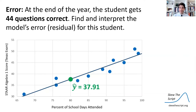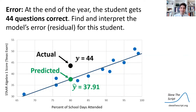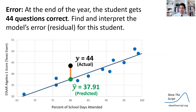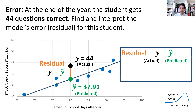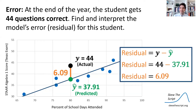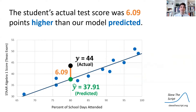At the end of the year the student actually takes the exam and gets 44 questions correct. We need to find and interpret the error of our model. The student actually got 44 questions correct, meaning we under-predicted his score. The distance between what he actually earned and what we predicted is called the residual. Using the formula actual minus predicted, we get a distance of 6.09. This means the student scored 6.09 points above what we predicted. His actual test score was about 6 points higher than our model predicted.